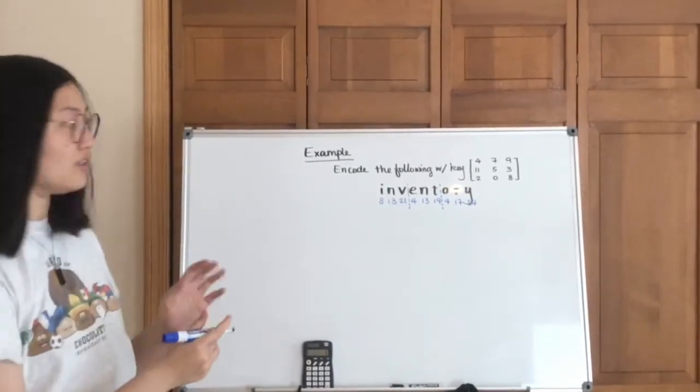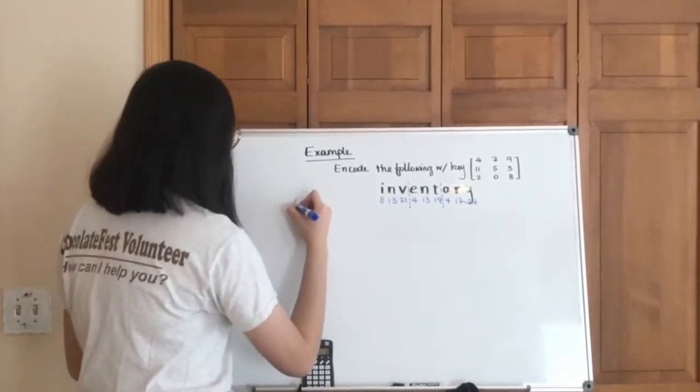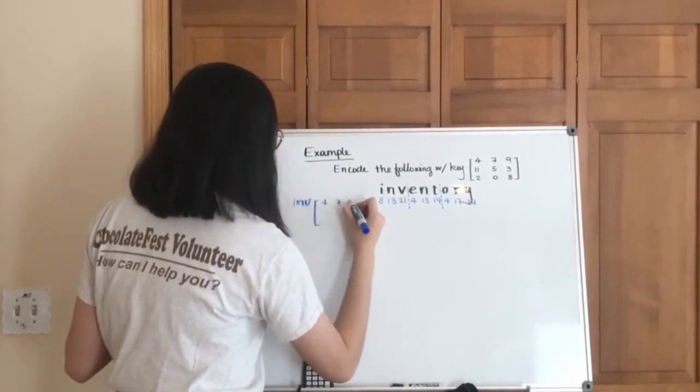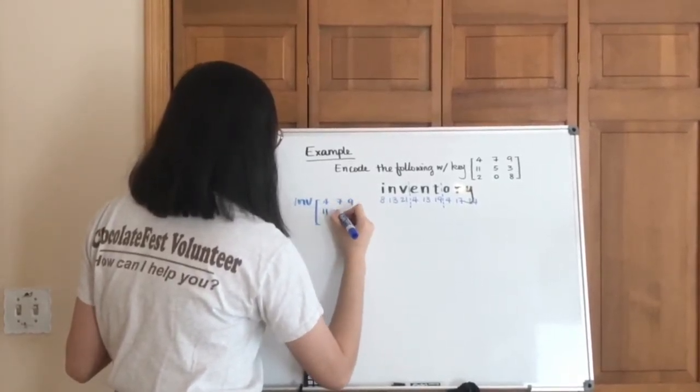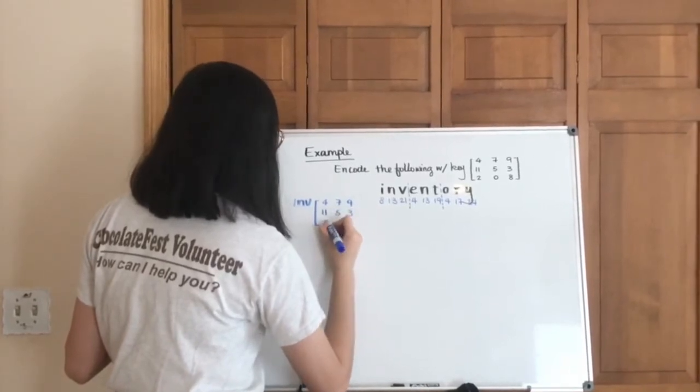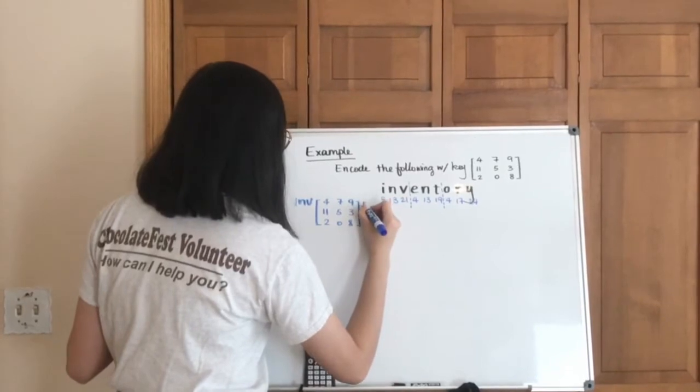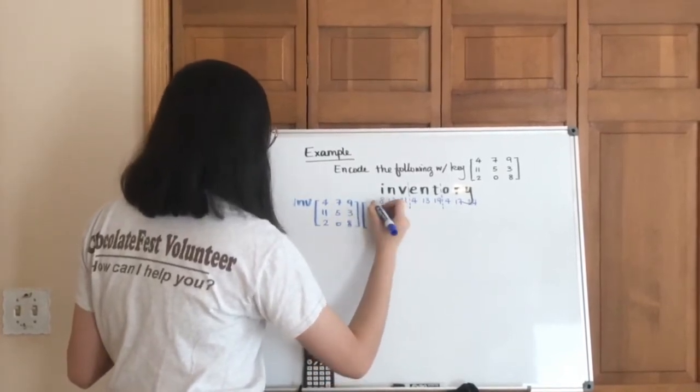And then we have the key, so we're just going to dive right in and say, so we're going to write down the key first, and we do multiplication with starting with the first three letters.